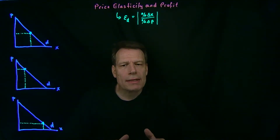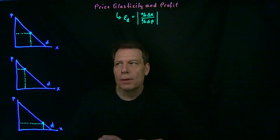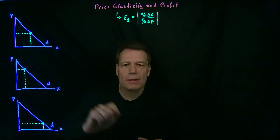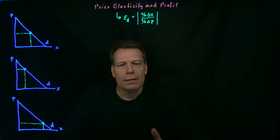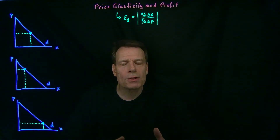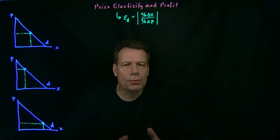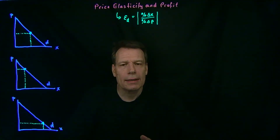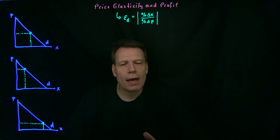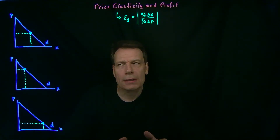So what does price elasticity of demand have to do with these linear downward sloping demand curves that we've been drawing? So far, it seemed like the slope of the demand curve is really a measure of the responsiveness of consumers to price changes. But if that were true, we'd have the same price elasticity of demand all along a linear downward sloping demand curve. But that turns out not to be true, so let's explore that a little bit further.